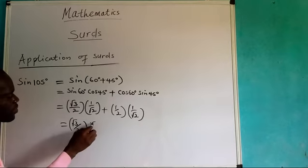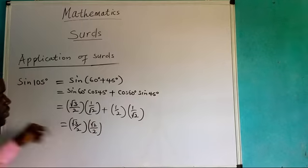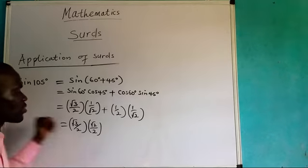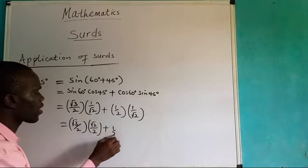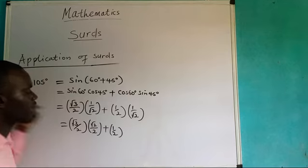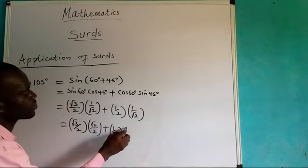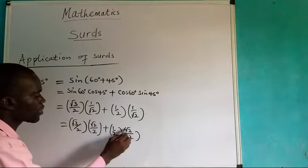Now let me look at the next one. This one, there is no surd at the denominator. I will have 1 over 2. While for this one I have the surd. I will have to rationalize. I will have root 2 over 2.